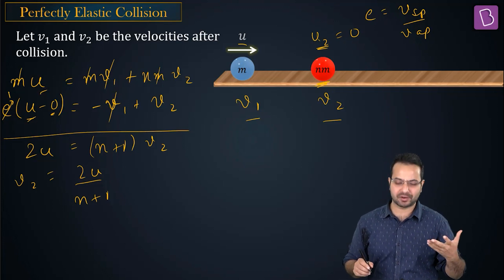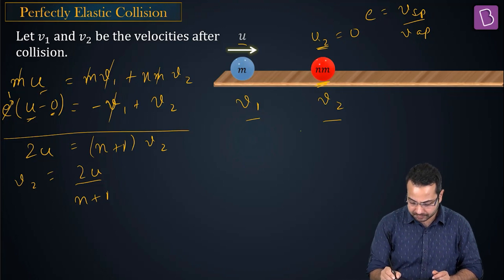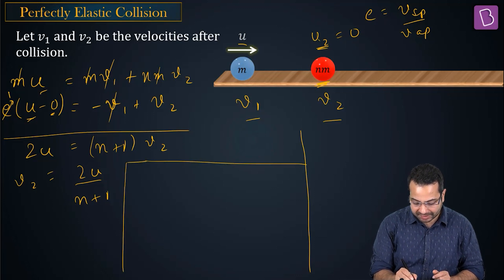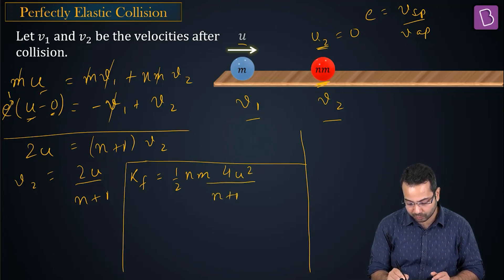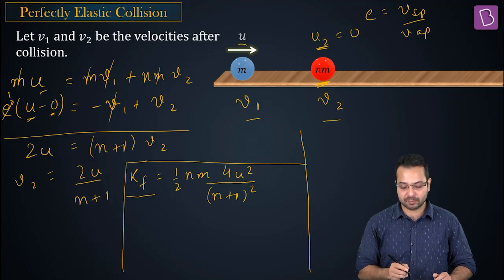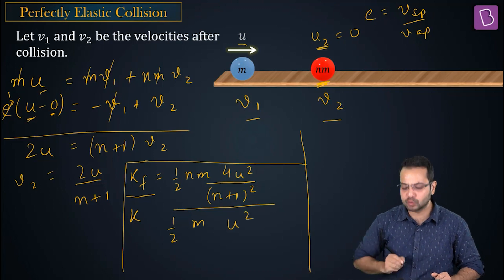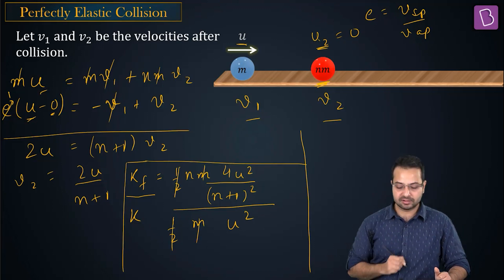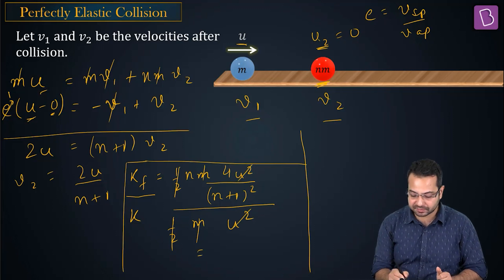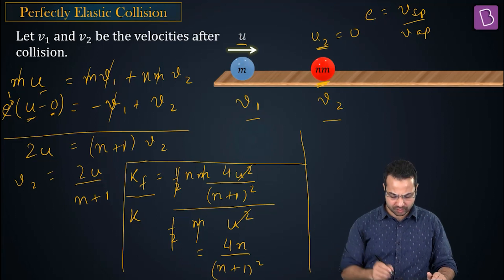We don't need the velocity of ball m — just the kinetic energy of nm divided by the initial kinetic energy of m. Final KE of nm is (1/2)·nm·v2² = (1/2)·nm·4u²/(n+1)². Dividing by the initial KE of m, which is (1/2)·m·u², and cancelling terms, we get 4n/(n+1)².